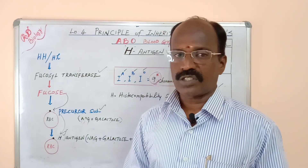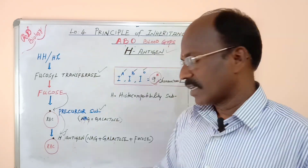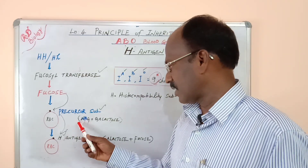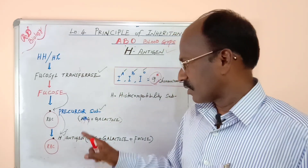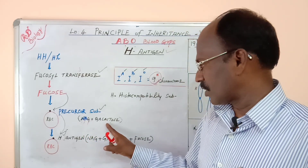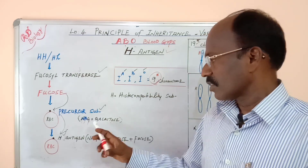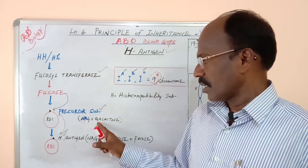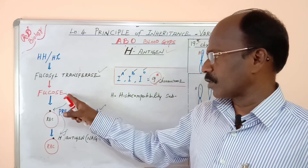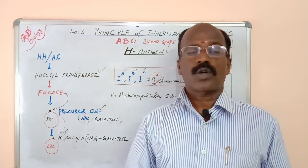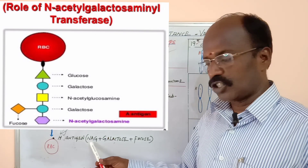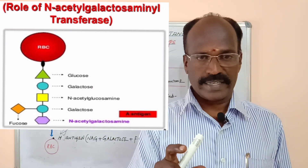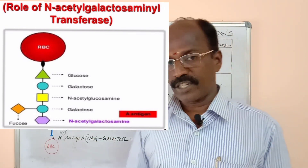What is the precursor made of chemically? NAG — N-acetylgalactosamine — is a monosaccharide which is in combination with galactose, another monosaccharide. NAG and galactose combine together to produce the precursor substance. This precursor in combination with fucose gives rise to antigen H. So altogether, antigen H is made of NAG plus galactose plus fucose — a combination of three monosaccharides.